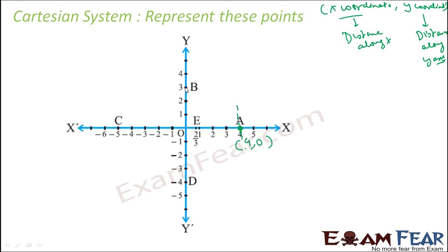For point B, the x-coordinate is the distance along the x-axis. Drawing a parallel line, the distance from the y-axis is 0 because the point lies on the y-axis. The y-coordinate is the distance along the y-axis from the x-axis, which is 3. So point B is 0 comma 3.